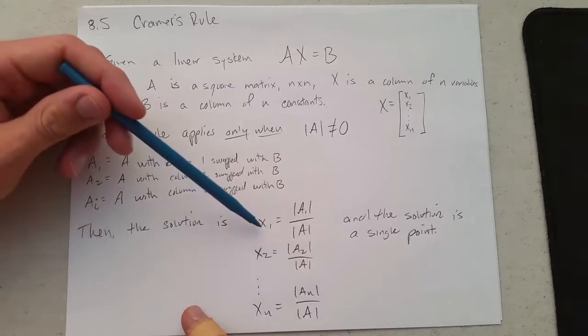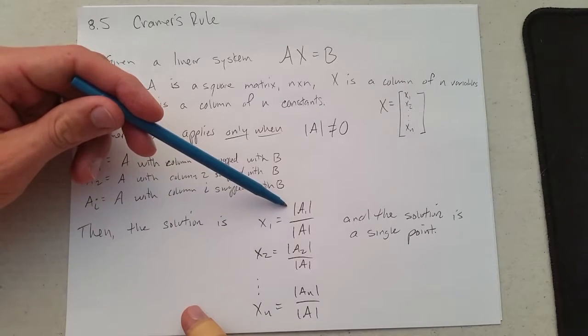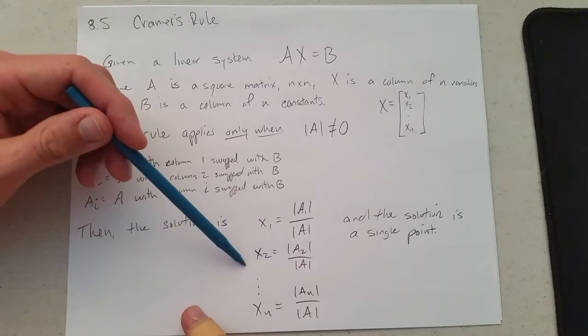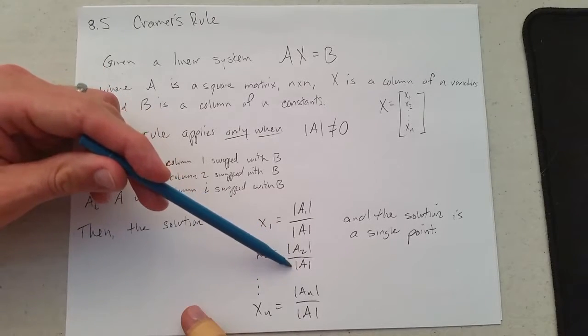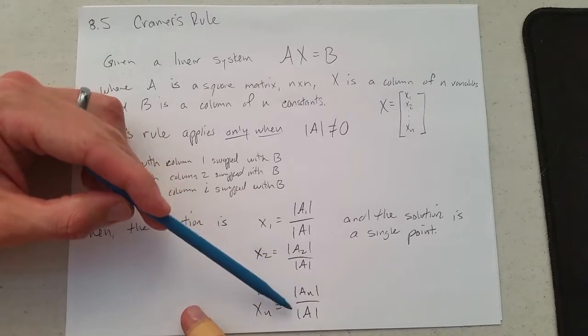The solution: x1 is the determinant of A1 divided by the determinant of A, x2 is the determinant of A2 divided by the determinant of A, and xn is the determinant of An divided by the determinant of A.